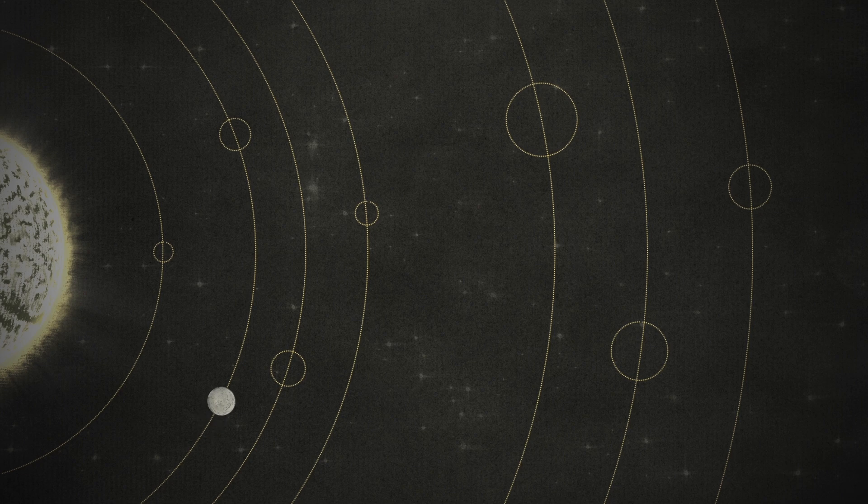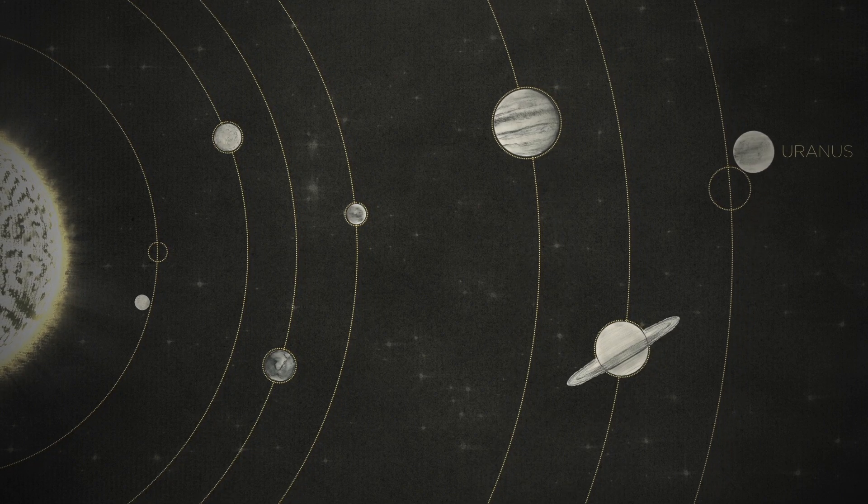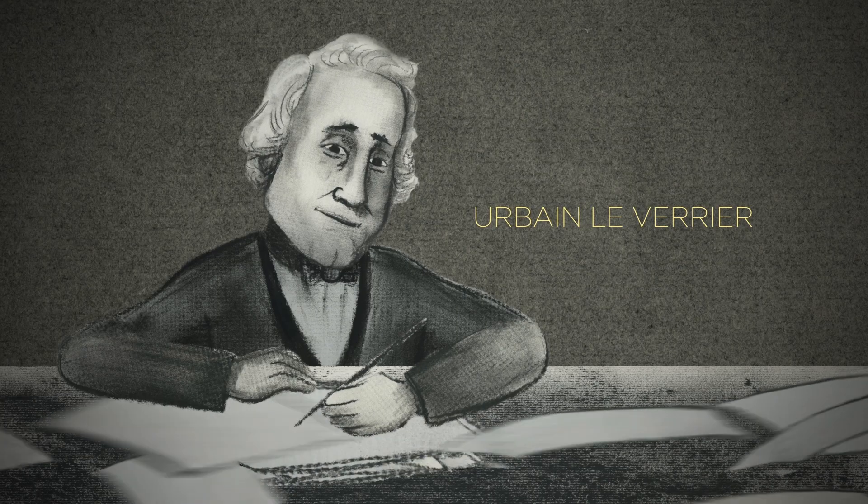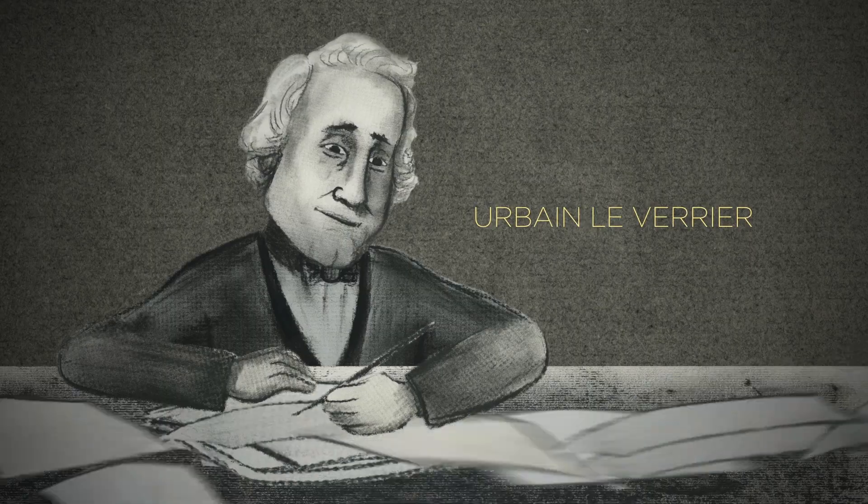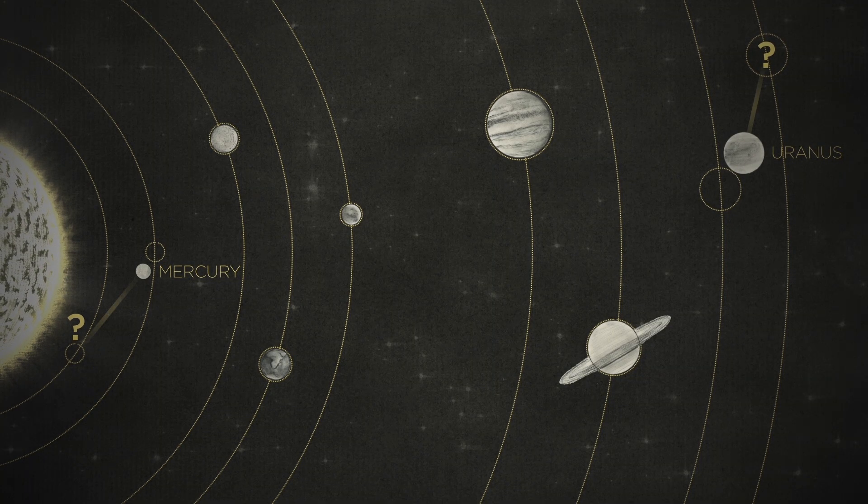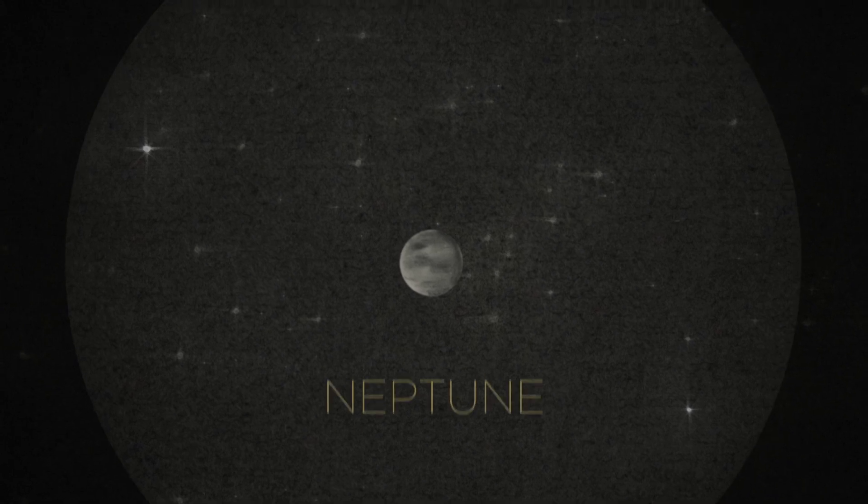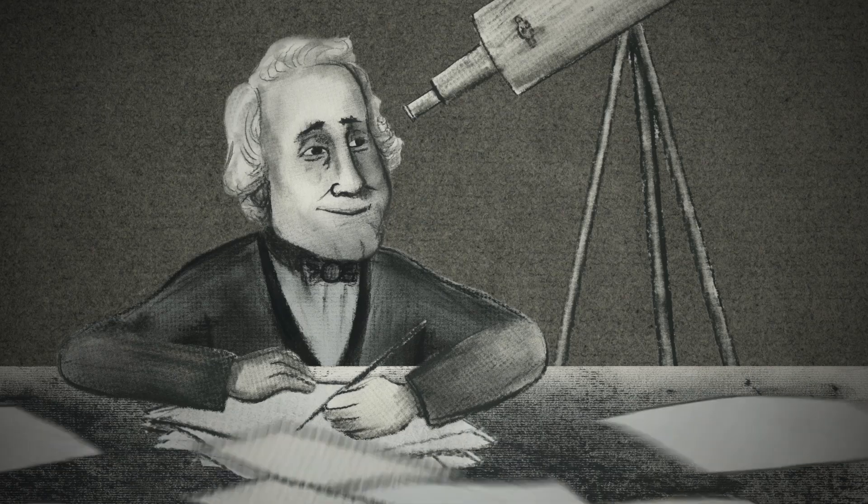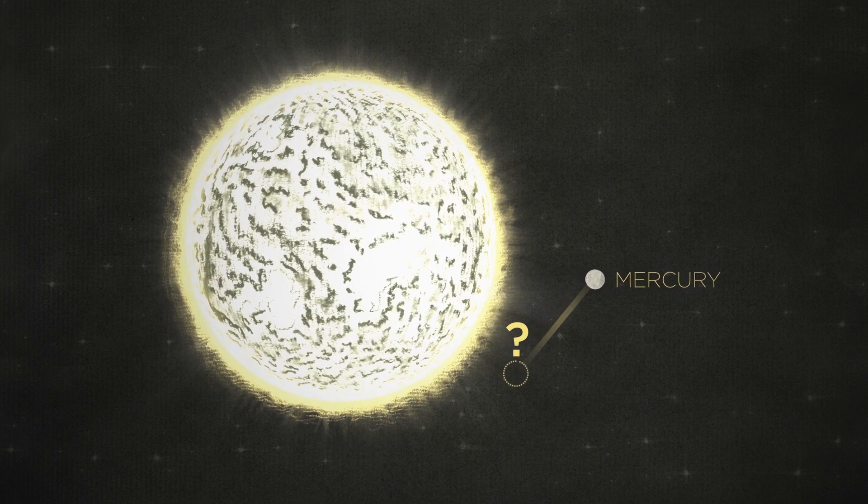People went on to use Newton's ideas to accurately predict the orbits of most of the known planets. But two planets had unexpected wobbles: Uranus and Mercury. In France, tireless mathematician Urbain Le Verrier used lots of equations to show that it must be the gravity of unknown planets pulling Uranus and Mercury off track. He calculated exactly where the planet pulling on Uranus would have to be. And when astronomers went to look, there it was. They named it Neptune. Le Verrier was psyched. He was so sure they'd find a planet pulling on Mercury too, he preemptively named it Vulcan.